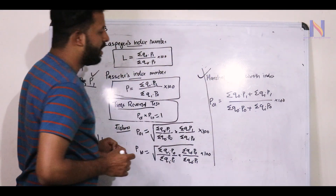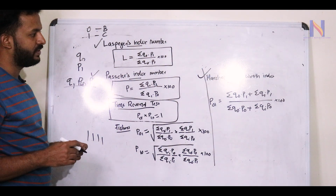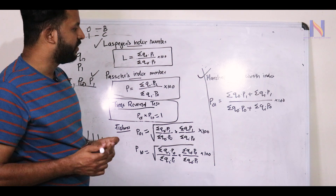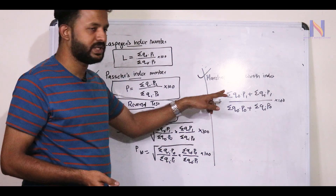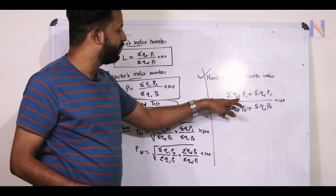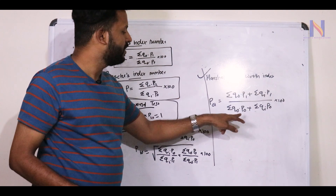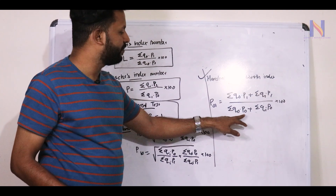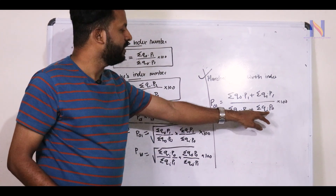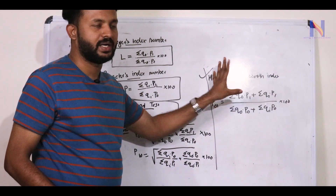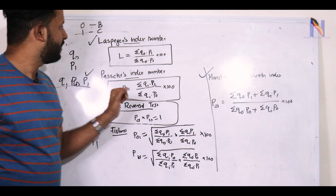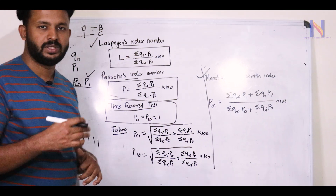Next is the Marshall-Edgeworth Index. The equation is: (Σq0·p1 + Σq1·p1)/(Σq0·p0 + Σq1·p0) × 100. I will show you three questions in this module.